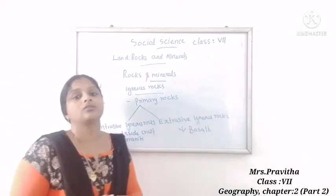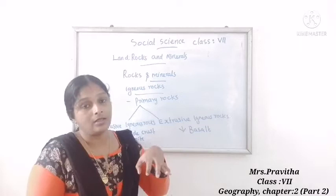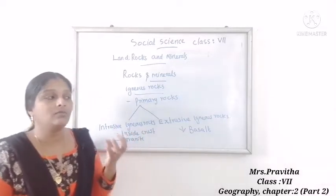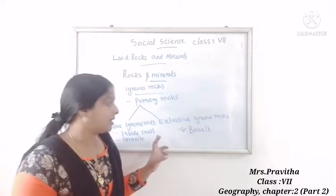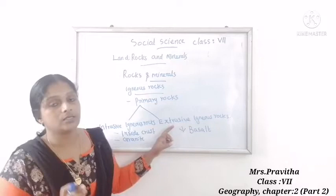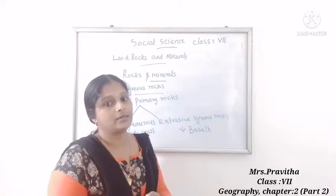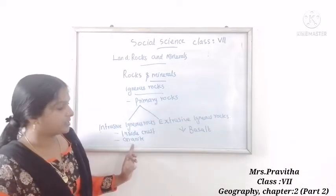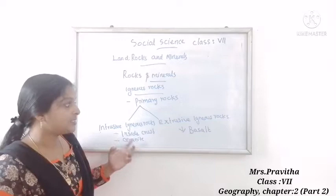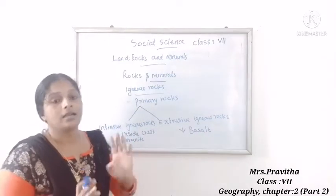Intrusive igneous rocks cool very slowly because they cool down inside the earth's crust, so they contain large mineral crystals. Extrusive igneous rocks cool quickly and contain small mineral crystals. That is why intrusive rocks have large crystals and extrusive rocks have small mineral crystals.